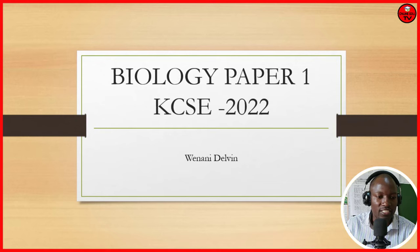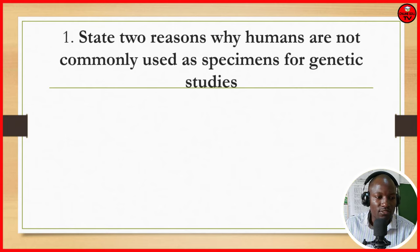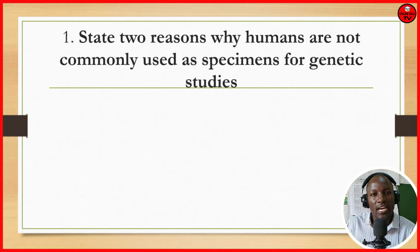This is how the paper looked like in the year 2022, biology paper 1. I will take you from question number 1 to the last question. Question number 1: state two reasons why humans are not commonly used as specimens for genetic studies. Human beings are also just animals like any other animal, but why do we not use them as specimens in the lab?